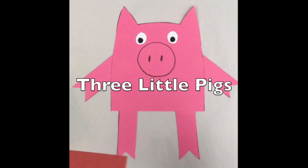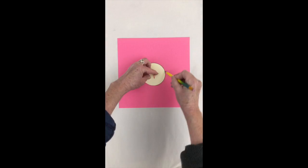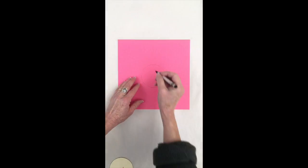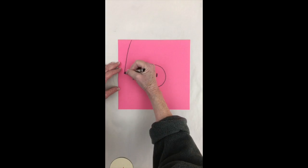We are going to make a pig from the Three Little Pigs. We're going to start with a square of paper and just trace a circle in the middle. We can use a black crayon to make a nose.